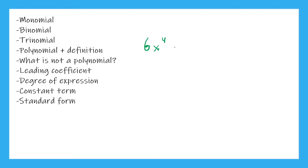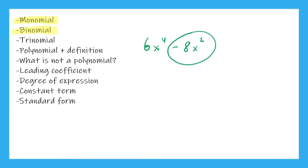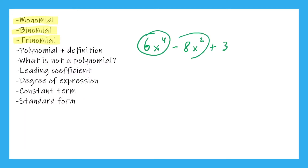Now if we say six x to the fourth minus eight x squared, we now have a binomial. I'm going to highlight monomial and binomial. This is a binomial because it has two terms: the first term is six x to the fourth, and the second term is negative eight x squared. A trinomial has three terms, so if we add plus three, we now have a trinomial. The first term is six x to the fourth, the second term is negative eight x squared, and the third term is three.